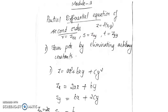Now if the number of arbitrary constants involved is more than the number of independent variables, you will get a higher order PDE. To eliminate the different arbitrary constants you need to use higher order derivatives, and there you will get a second order PDE.